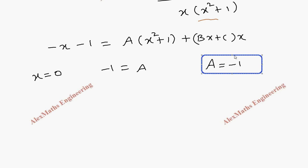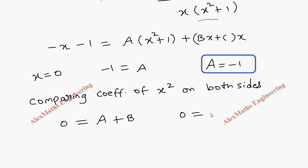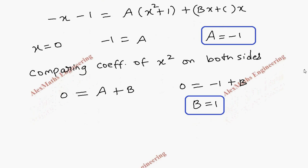We don't have another factor to make a term zero, so we are going to compare the coefficient of x² on both sides. On the left-hand side there is no x² term, so it is 0. On the right-hand side the coefficient of x² is A plus B. Since A is minus 1, we get 0 equals minus 1 plus B, so B equals 1.